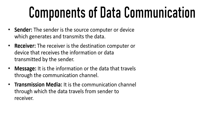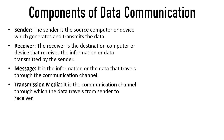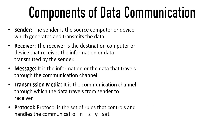Transmission media is the communication channel or the pathway through which the data travels from sender to receiver. It may be a wired communication channel like a cable, or a wireless communication media like Bluetooth or Wi-Fi. Protocol is an important component that controls the overall communication system — it is the set of rules that handles data communication between computers in the network.